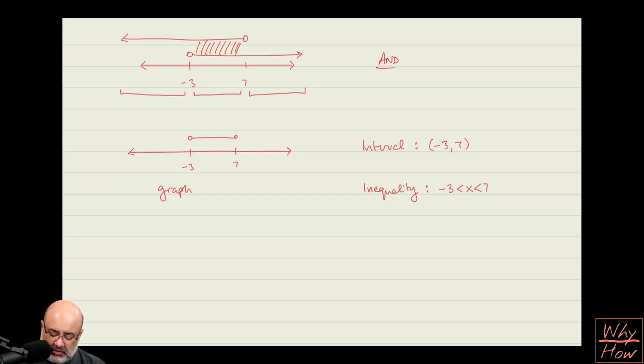Now, as an alternative, if this had been a solid dot, then the overlap does occur here at negative 3, then this would be a solid dot. And for the interval, I would use a square bracket, because whenever I have a solid dot, I have to use a square bracket. And for the inequality, I would use less than or equal to. So hopefully that helps.